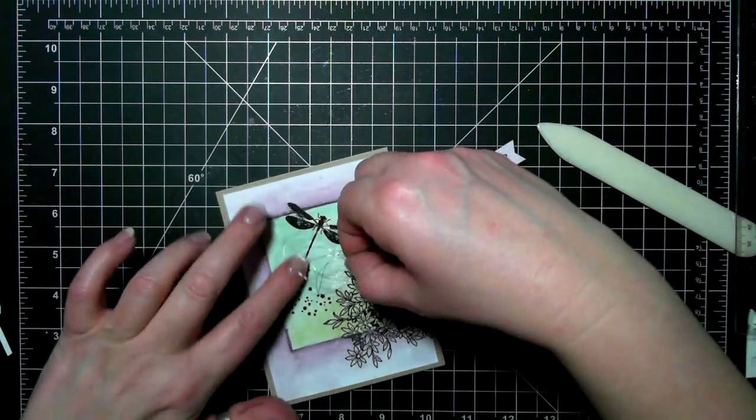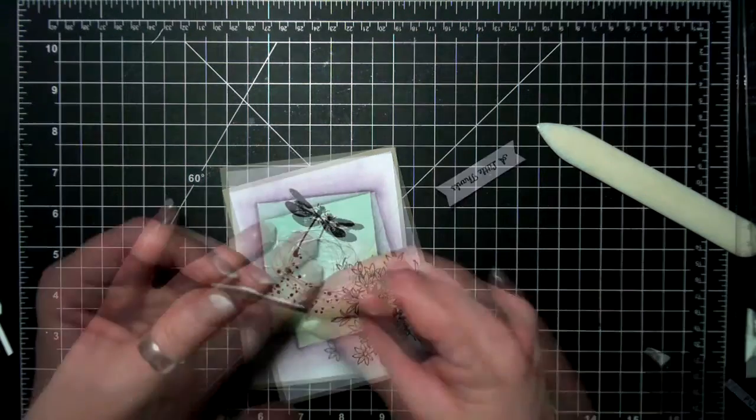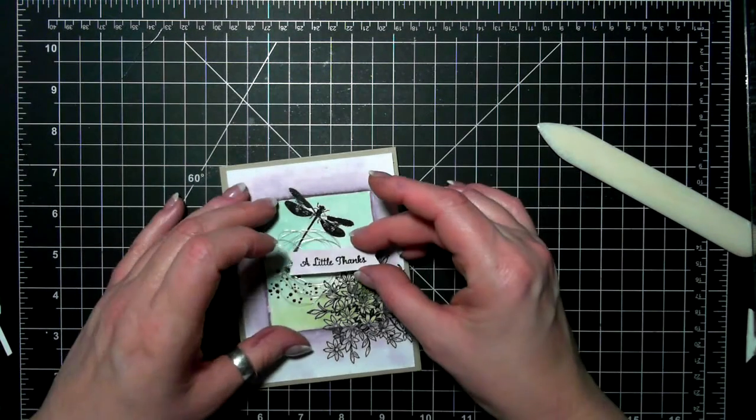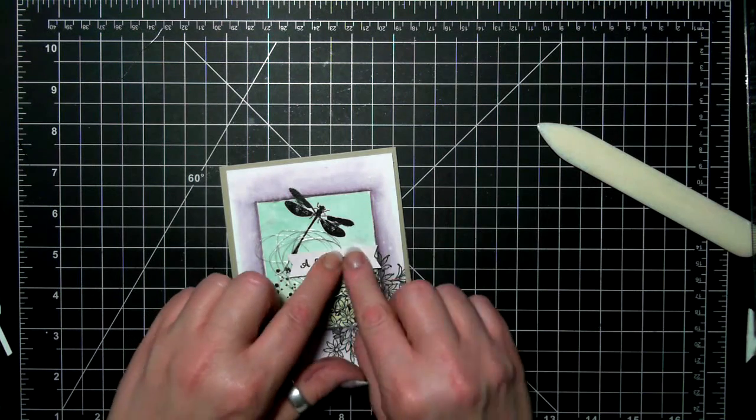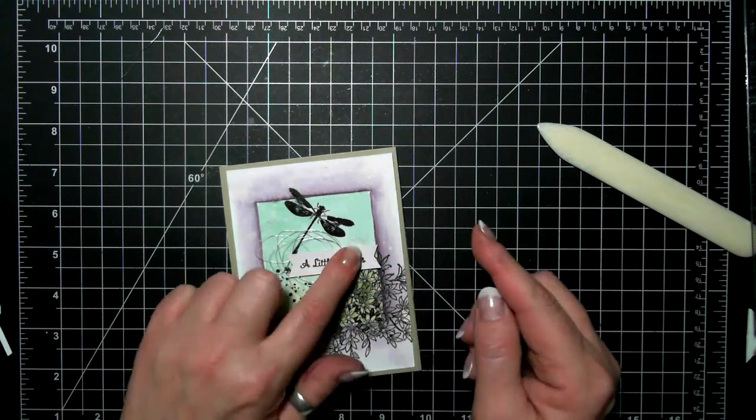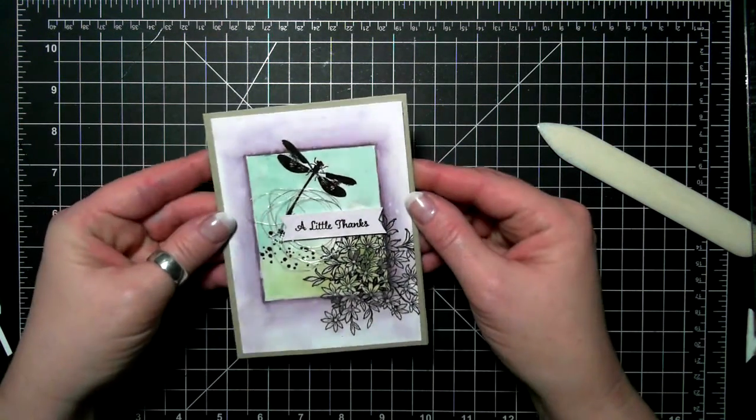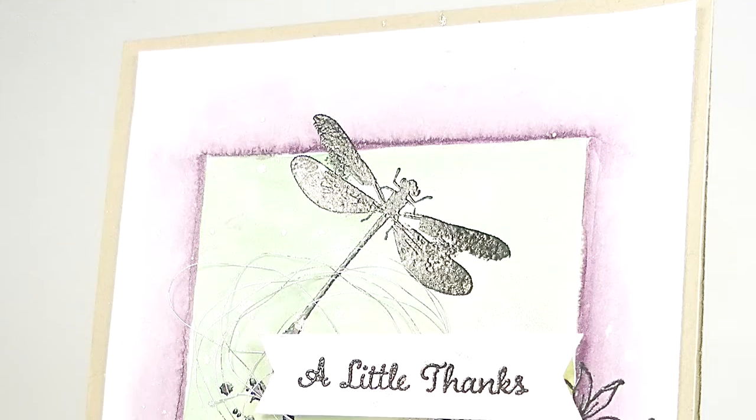I put a little bit of adhesive on the cardstock and then push it down and then anchor it with something else. And look that Wink of Stella blob is gone. Yay! Anyway that's my card for today. Thanks so much for joining me and I will see you again soon. Bye!